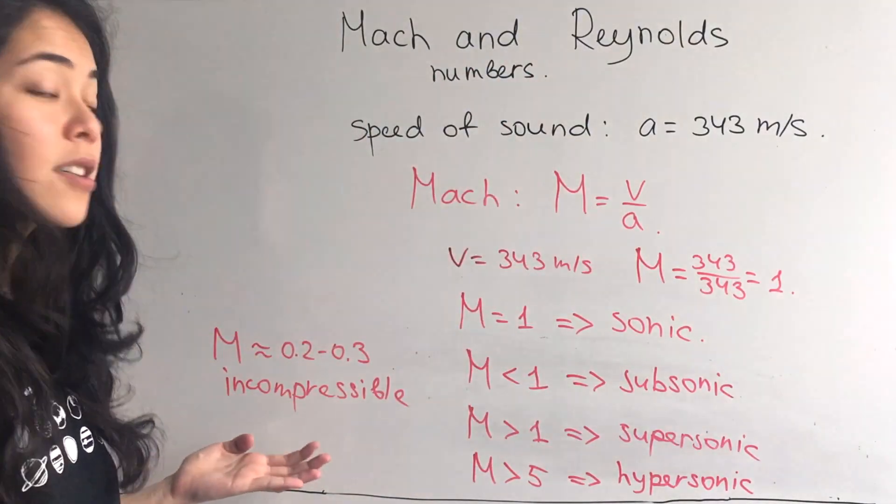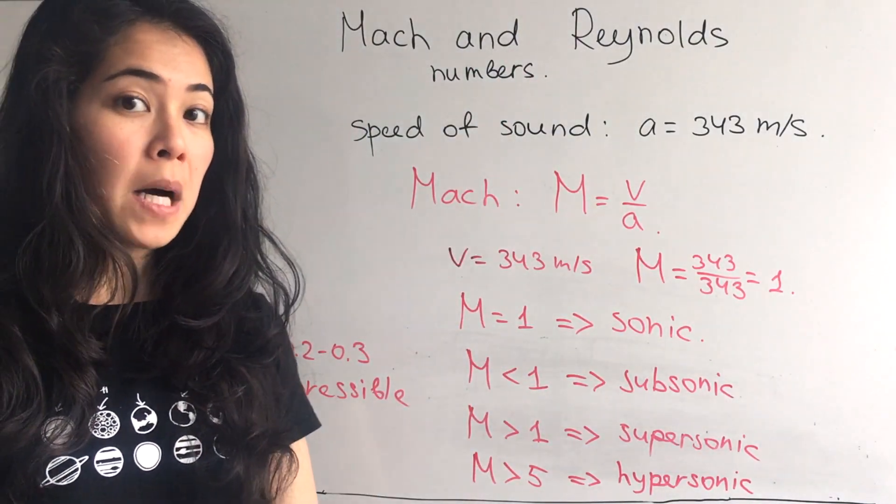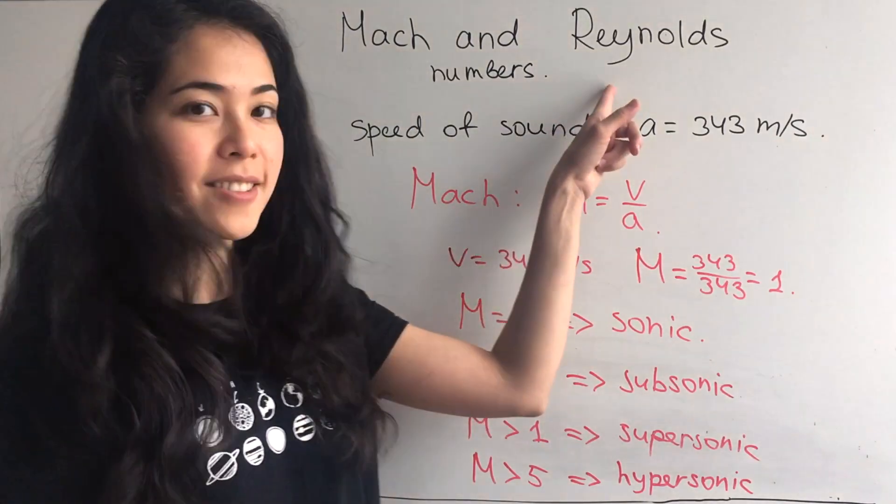So now we can describe this as actual aerodynamicists. These are the basic concepts you need to remember about the Mach number. Now let's move on to Reynolds number.